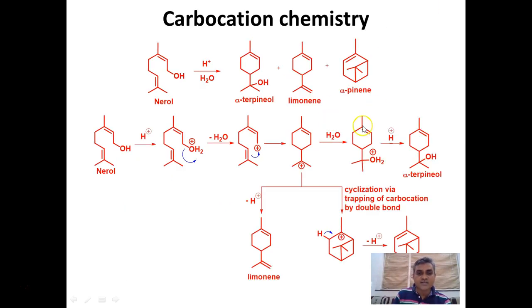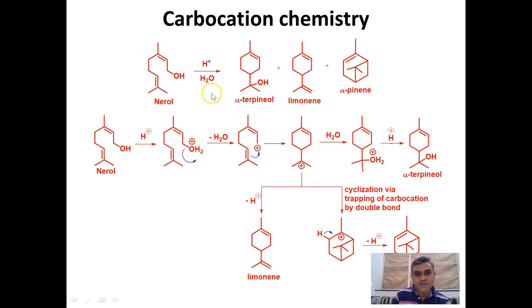Now let us consider another transformation of nerol. Nerol under acidic conditions forms alpha-terpineol as we have seen, but apart from alpha-terpineol it also forms small quantities of limonene as well as alpha-pinene. These are laboratory reactions analogous to what nature does, but instead of a hydroxyl group nature uses a pyrophosphate. We will encounter this in the biosynthesis of alpha-terpineol, limonene and alpha-pinene.